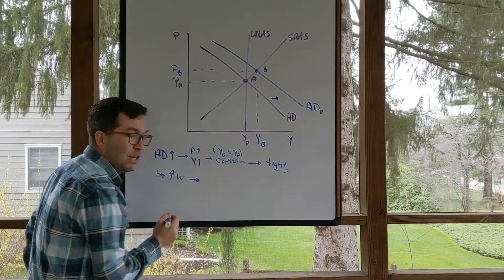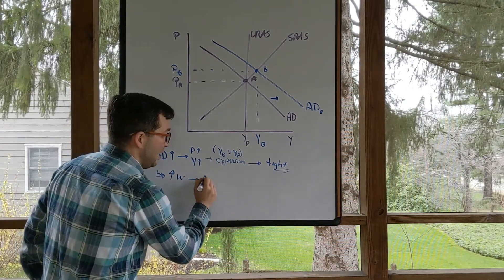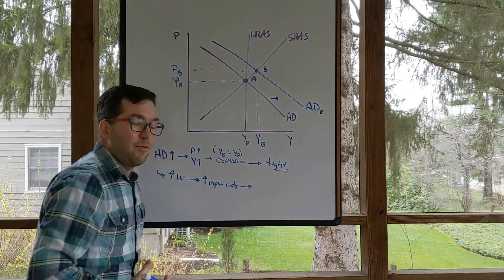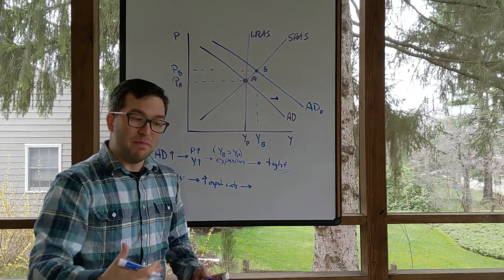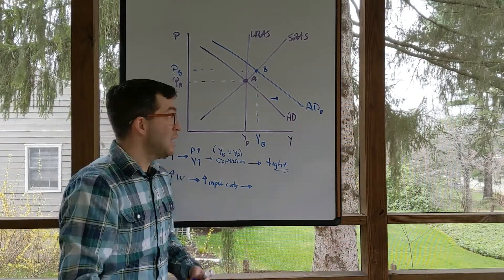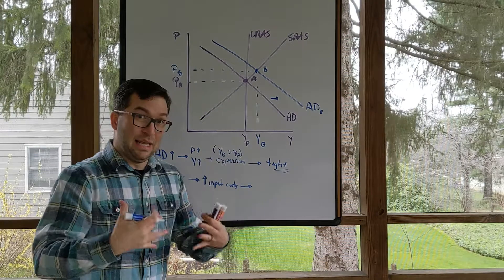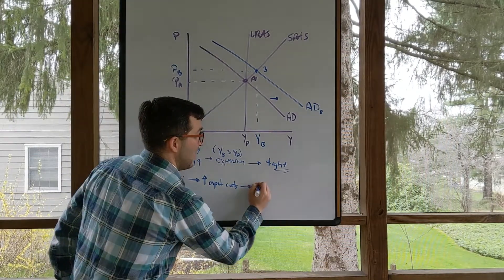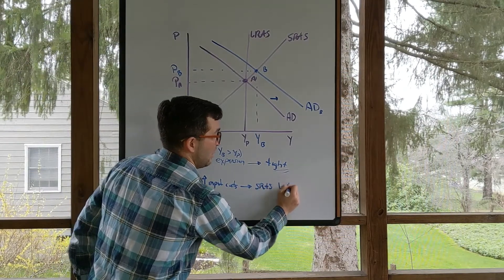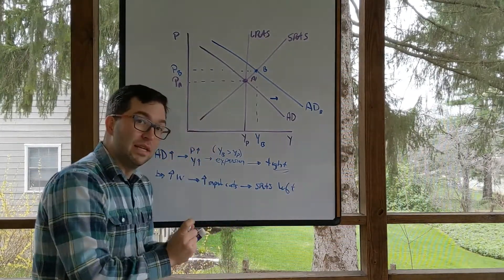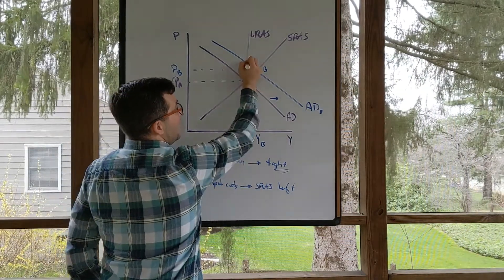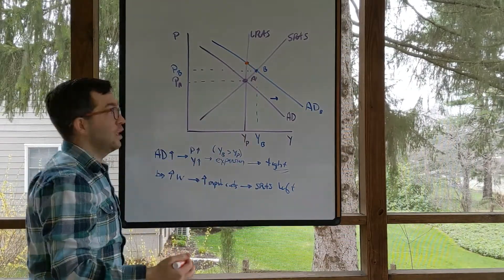Upward pressure on wages is going to lead to increases in input costs, which again, if we're starting to expect higher wages, people will then start to expect higher prices. Firms are going to have to accept the idea that they need to start paying people more. All of this is going to lead to that short-run aggregate supply curve shifting to the left or decreasing in our model. It's going to go back again towards long-run aggregate supply.